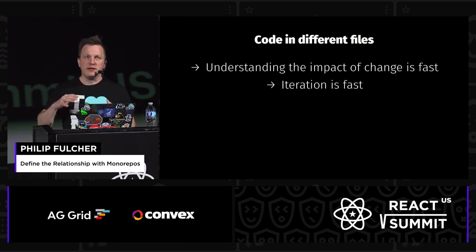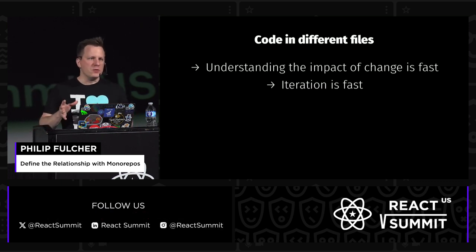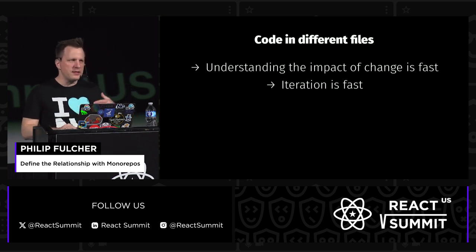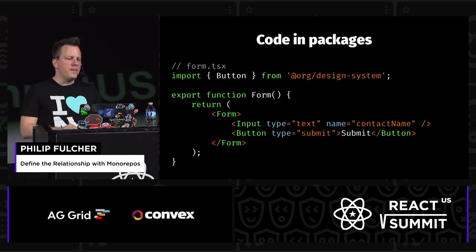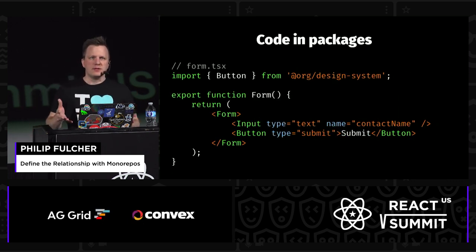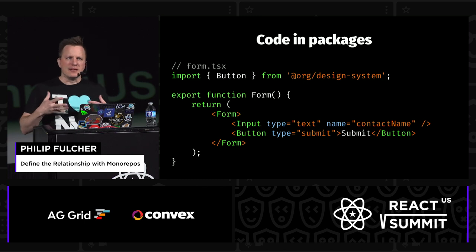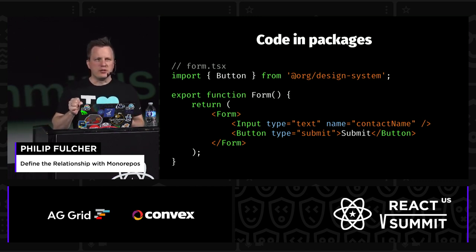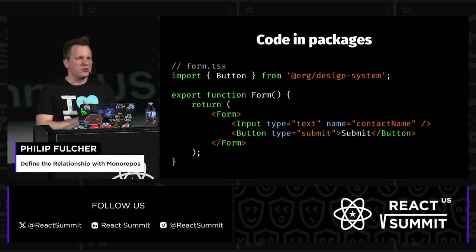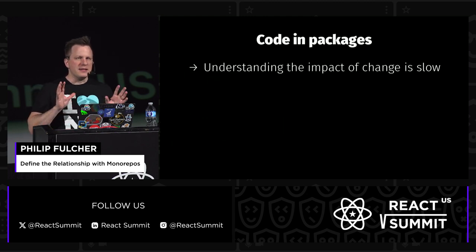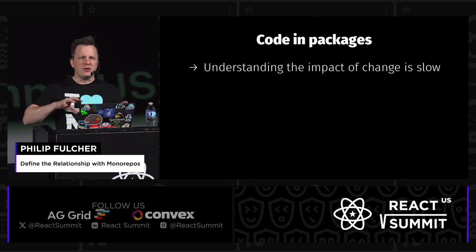You can understand the impact of your change immediately, and because of that, iteration is really fast. You make a change, you can see it, respond to it, fix it, and move on — you're moving fast. Now let's see what happens if we take that relationship one step away and think about code in packages. If we import that button from a design system published by our organization, this feels really similar to what we just did. Unfortunately, we've increased the distance between these two pieces of code, and what that does is make understanding the impact of the change slow.